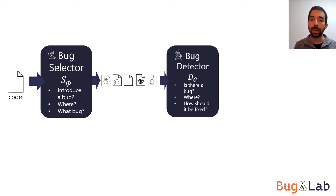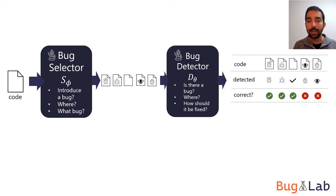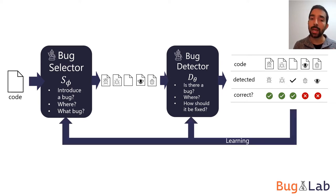Then, the bug detector model tries to learn to locate and fix the inserted bug, if one was inserted. The selector and detector models are trained together. Note that the selector makes discrete edits in the code text. Thus, we need to use sampling from the discrete set of rewrites during the training process.